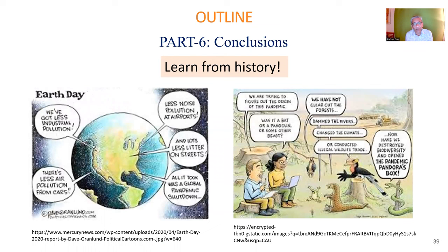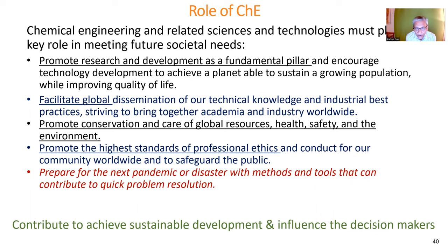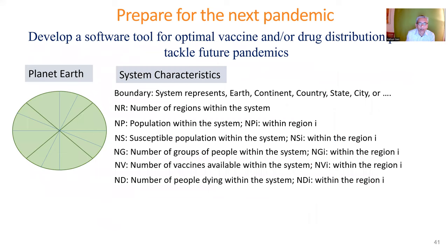Finally, conclusions. What have we learned from history regarding the role of engineers — chemical, biochemical, process systems engineers, and others? We should promote research and development as a fundamental pillar, facilitate global dissemination of knowledge, promote conservation and care of global resources, health, safety, and environment, promote high standards, and prepare for the next pandemic or disaster with methods and tools that can contribute to quick problem resolution.